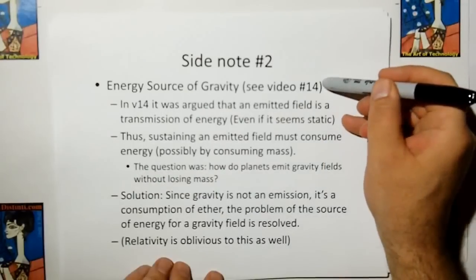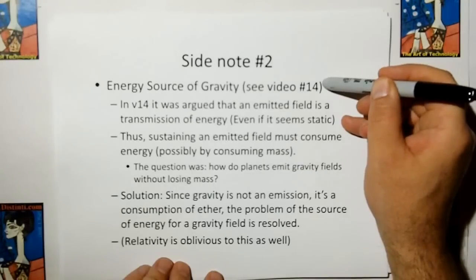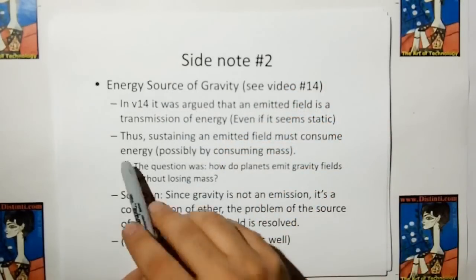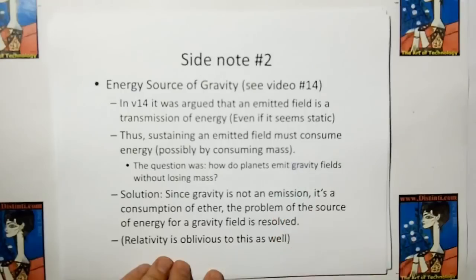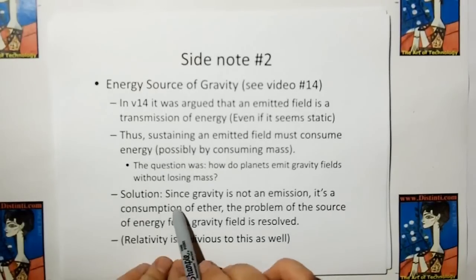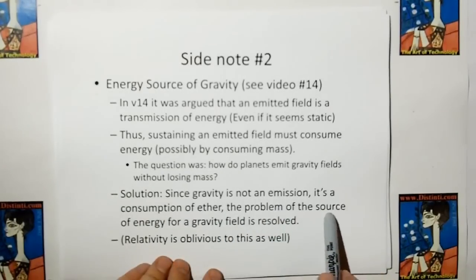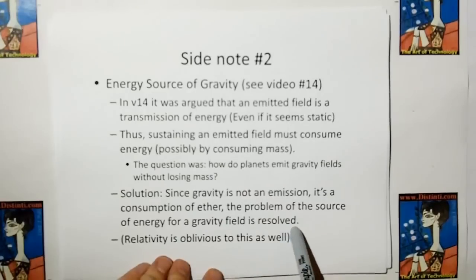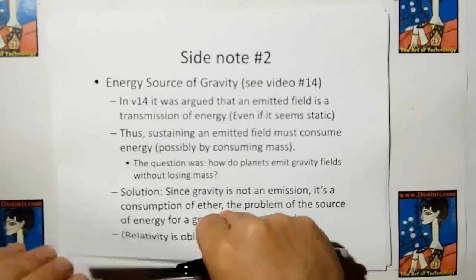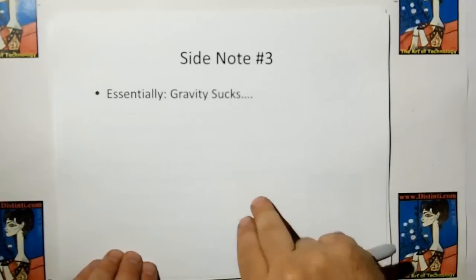In video 14, we said that all emitted fields must have a source of energy, otherwise the object emitting that energy must be losing mass. Sustaining an emitted field must consume energy, possibly consuming mass. So the question was: how do planets emit gravity fields without losing mass? The solution: since gravity is not an emission but a consumption of ether, the problem of the source of the energy for gravity fields is resolved. Relativity is oblivious to this as well. Essentially, gravity sucks.